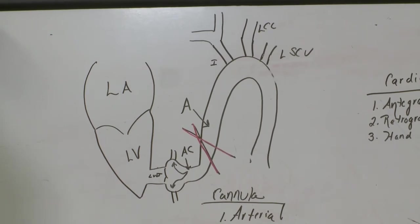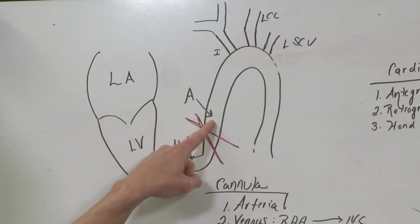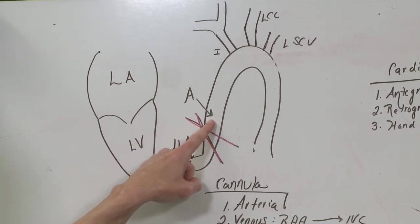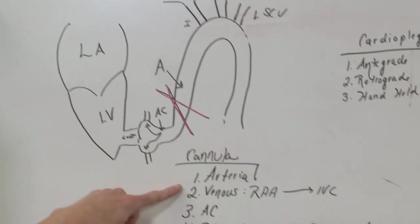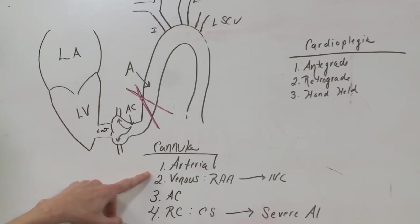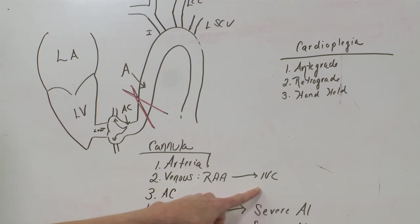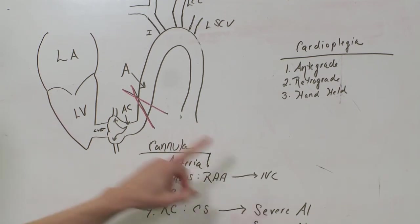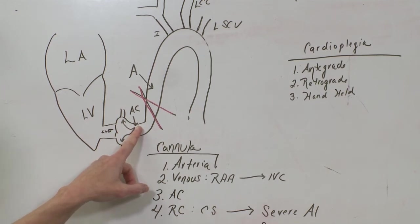So let's briefly review our cannulation strategy. First, your arterial cannula is going to go in the ascending aorta. Second would be your venous cannula. They will place that in the right atrial appendage that will go down towards the IVC in a standard single venous cannula. Third, the antegrade cardioplegia will go down here closer to the coronaries.